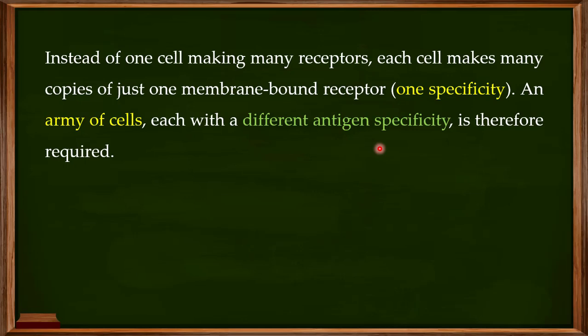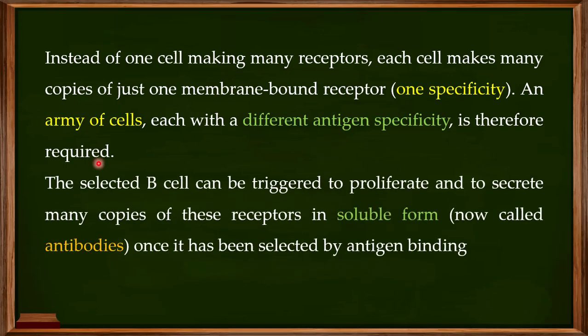An army of cells, each with a different antigen specificity, is therefore required. Selected B cells can be triggered to proliferate and secrete many copies of these receptors in soluble form — which we now call antibodies — once selected by the antigen. So while Ehrlich proposed that many receptors are produced by a single B cell, our refined understanding is that different immune cells each produce a single kind of monospecific receptor, and once the antigen selects a B cell, that cell proliferates to produce only the receptor needed to neutralize that specific antigen.